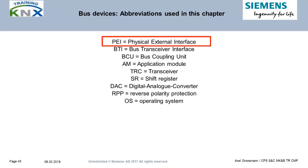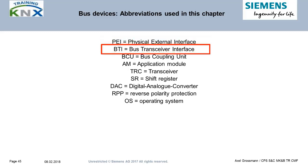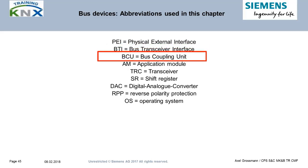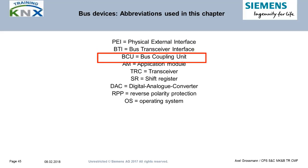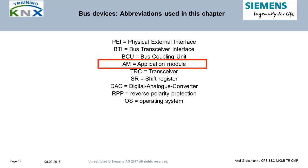PEI: the standardized connection interface between classical bus couplers and application modules. BTI is the same, but only for Siemens devices. BCU stands for Bus Coupling Unit. AM stands for Application Module — the part of the bus device which makes up its function.